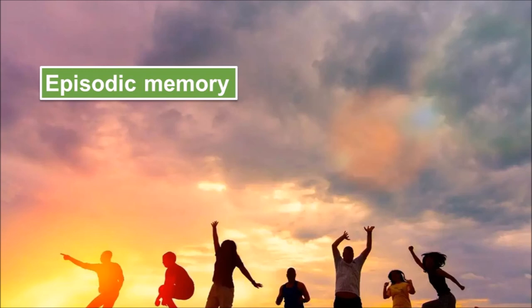Currently, scientists believe that episodic memory is memory about happenings in particular places at particular times — the what, where, and when of an event, Tulving, 2002. It involves recollection of visual imagery as well as the feeling of familiarity, Hassabis and Maguire, 2007.